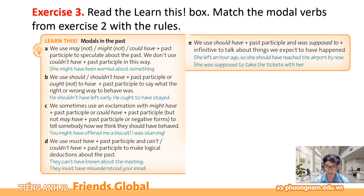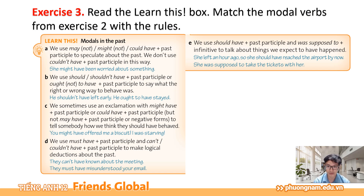Modals in the past — Động từ khiếm khuyết trong quá khứ. Rule A: chúng ta có thể dùng những từ như là may not, might not, could have cùng với quá khứ phân từ để suy đoán về những cái tình huống trong quá khứ. Chúng ta sẽ không sử dụng couldn't have với quá khứ phân từ theo cái cách này. Ví dụ: She might have been worried about something — Cô ấy có thể đã lo lắng về một điều gì đó. Đây là một cái suy đoán về một cái tình huống trong quá khứ.